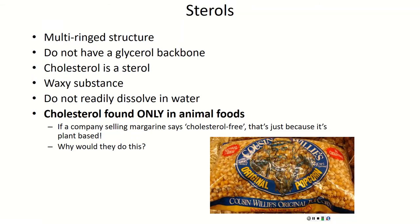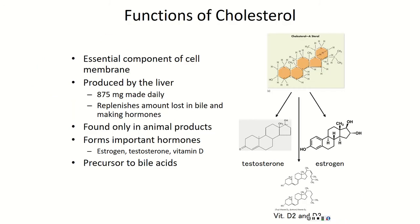Why would Cousin Willie say that? It's a marketing perspective — writing 'no cholesterol' makes people more likely to buy it over a competitor. But what you know from this class is that if it's plant-based, there is no cholesterol, because plants make a different sterol called phytosterol. Phyto means plant, sterol is your ring structure — so phytosterol means plant sterol. Cholesterol comes from animal sources. Most people try to stay away from cholesterol, but in reality, cholesterol is extremely important. Without cholesterol, your body would not be able to function — every single cell has a membrane, and cholesterol is embedded in it.